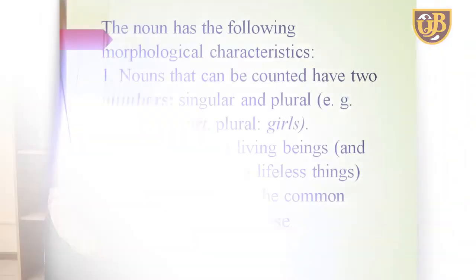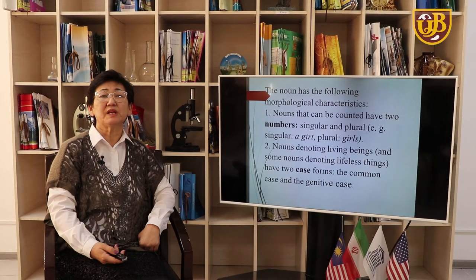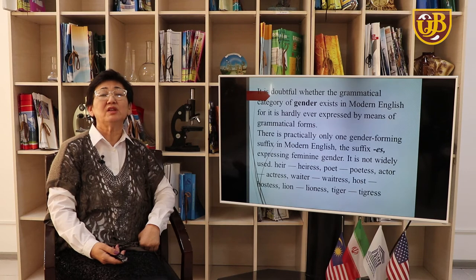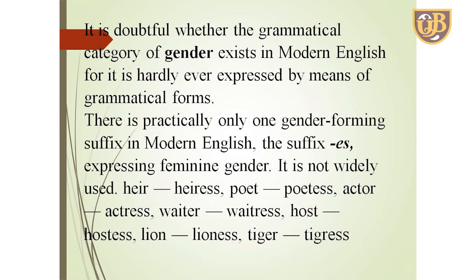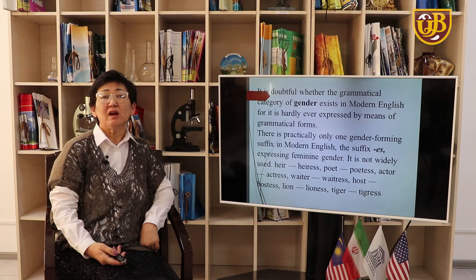The noun has the following morphological characteristics. Nouns that can be counted have two numbers: singular and plural. Nouns denoting living beings and some nouns denoting lifeless things have two case forms: the common case and the genitive case. It is doubtful whether the grammatical category of gender exists in modern English, because it is hardly ever expressed by means of grammatical form. There is practically only one gender-forming suffix — the suffix -ess — expressing feminine gender. It is not widely used.